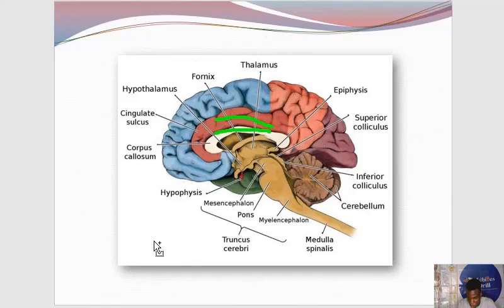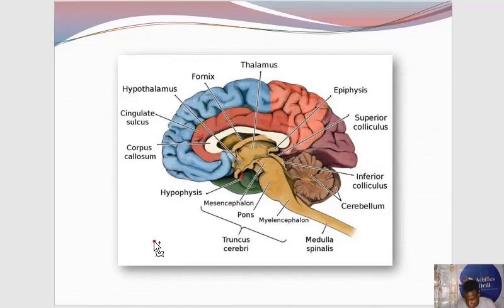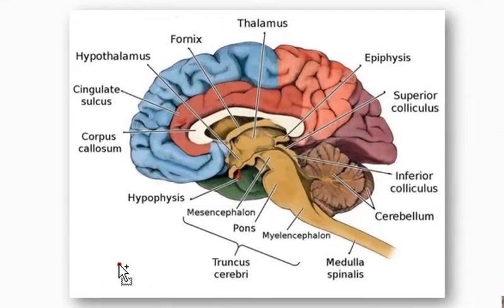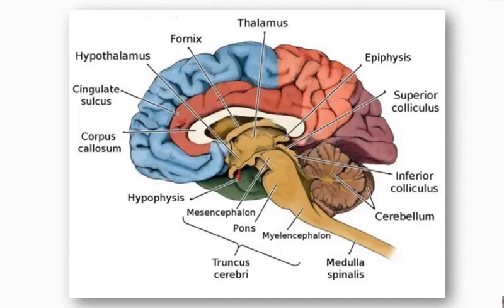Here is a summary picture of what we've been discussing: the cingulate gyrus, the callosal sulcus, the corpus callosum, the cingulate sulcus, the parieto-occipital sulcus, the calcarine sulcus, and the fornix. Apart from these, there is a large cavity to draw your attention to. Do you know what cavity that is? Sometimes a probe can be placed within that cavity and you'll be asked: the probe here resides in what cavity? That cavity is your lateral ventricle.